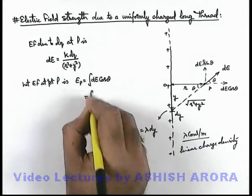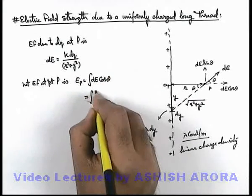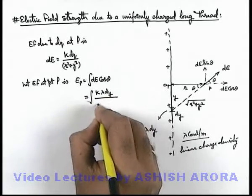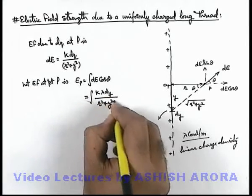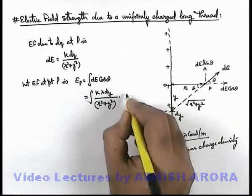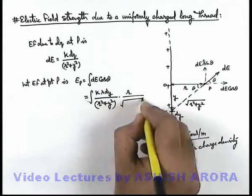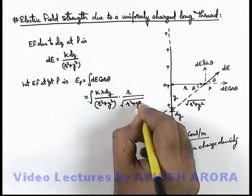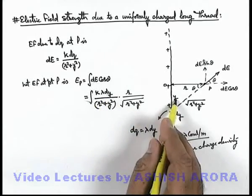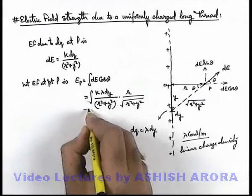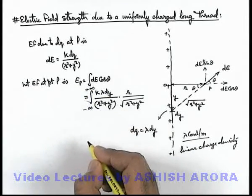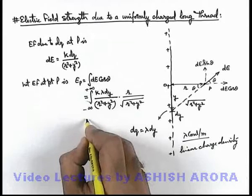Substituting the value of dE, we get k·lambda·dy divided by (r² + y²), multiplied by cosθ, where cosθ can be substituted as r divided by the square root of (r² + y²). For the limits of integration, as the thread is long, we substitute limits from minus infinity to plus infinity.